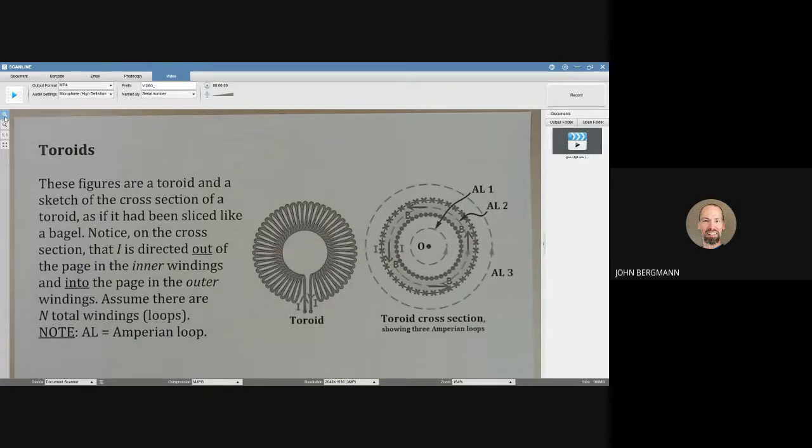So a toroid is kind of like a donut shape and what we're showing in the right figure is we're imagining that we have sliced that donut or bagel through the middle and what we're seeing here